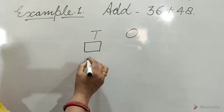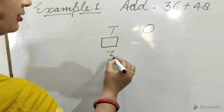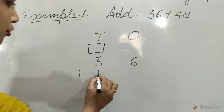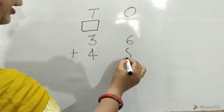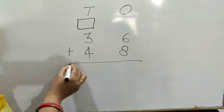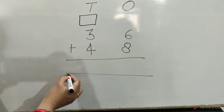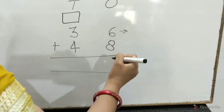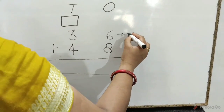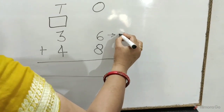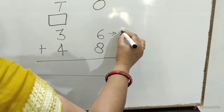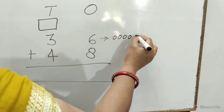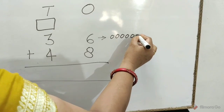Then write 3 tens, 6 ones plus 4 tens, 8 ones. Children, for very easy, we can draw 6 circles in front of 6 ones: 1, 2, 3, 4, 5, 6.